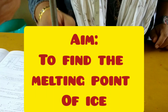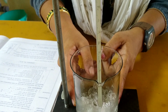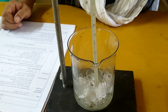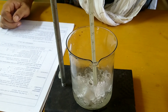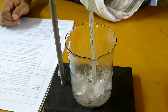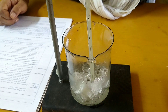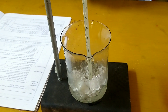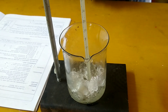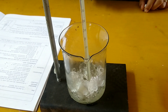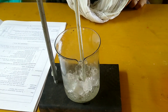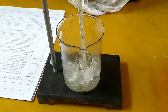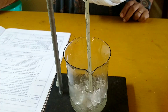Insert the thermometer in your ice, kept in the beaker. You can see the mercury level coming down. You can record the temperature. The melting point of ice is 0 degree Celsius.